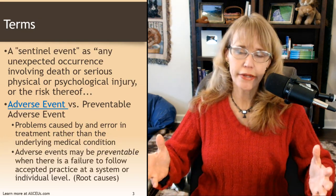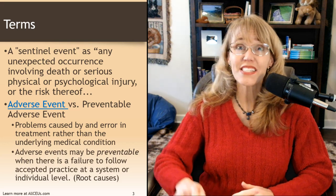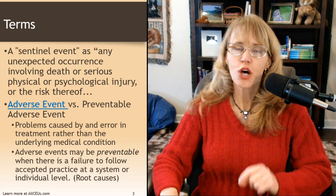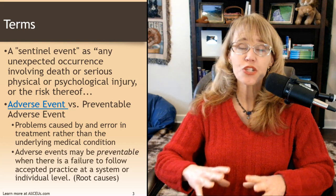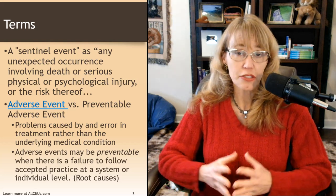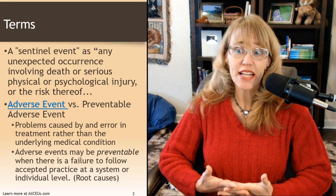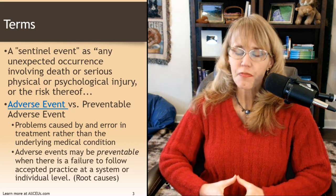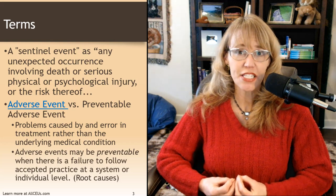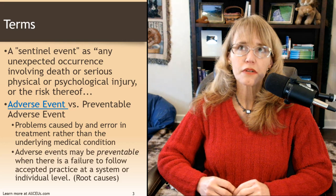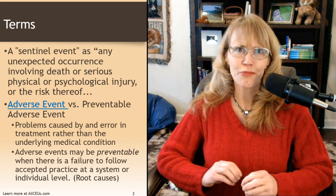Let's start out with the terms. A sentinel event is any unexpected occurrence involving the death or serious physical or psychological injury or risk thereof. It's really important to note that a sentinel event does not have to cause physical or psychological injury, but it has to have had a good probability of doing so — we just got lucky. An adverse event is a type of sentinel event, but you can have adverse events that are preventable versus not preventable. Problems caused by an error in treatment rather than the underlying medical condition are considered adverse events. Preventable adverse events are those events that occur when there's a failure to follow accepted practice at a system or individual level — that's when we start getting into that whole malpractice area.